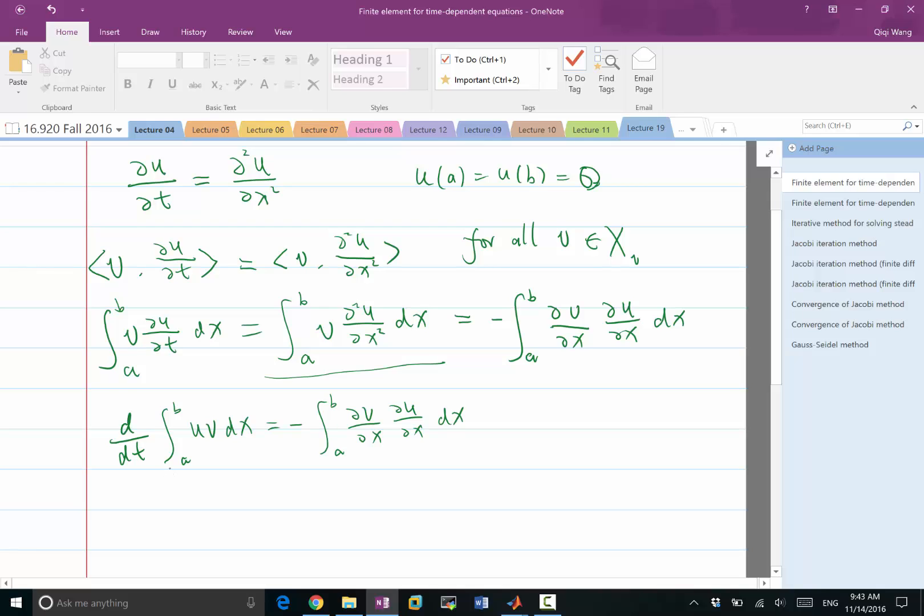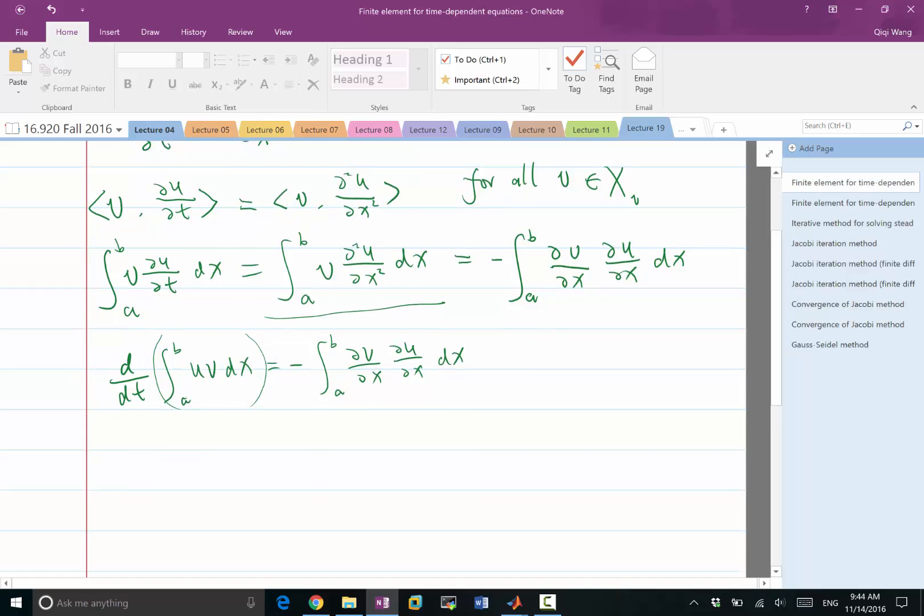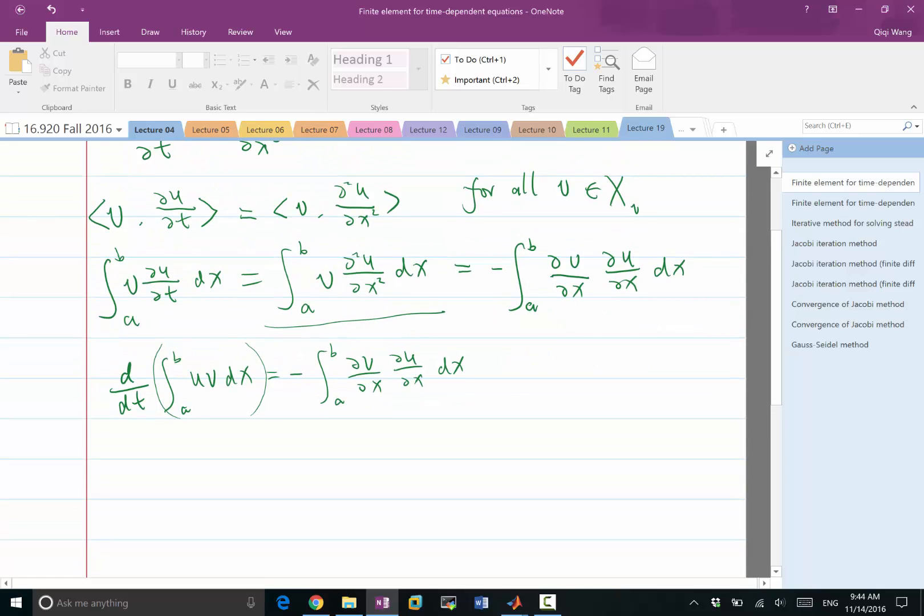So the left-hand side becomes d/dt of an integral uv dx would be equal to minus integration of derivative of v, derivative of u dx. Now we get two bilinear forms. One is integration of uv, the other integration of du/dx times dv/dx. Both are bilinear forms. Except for one bilinear form has a time derivative in it.